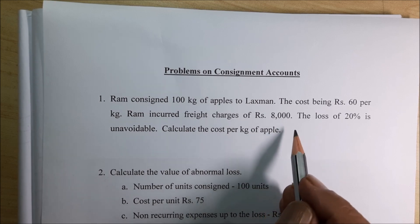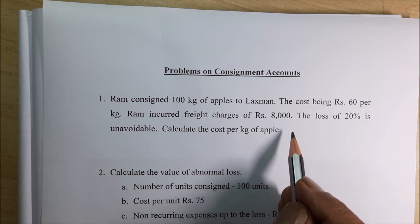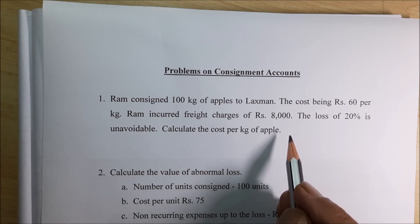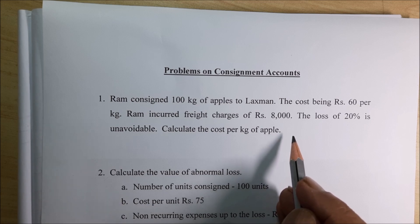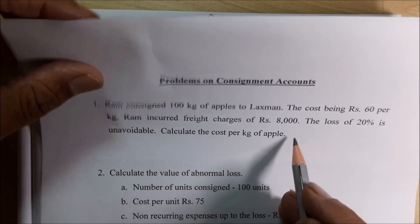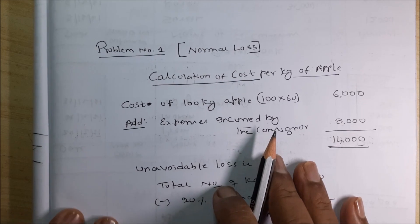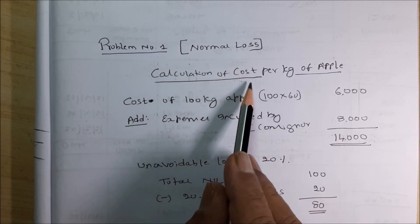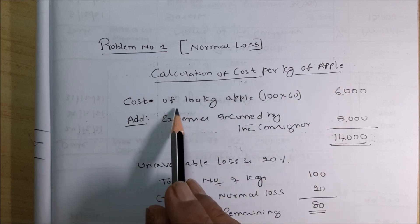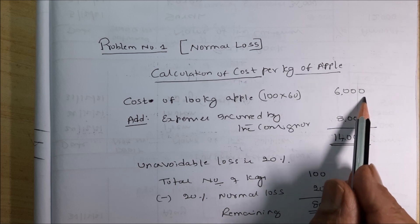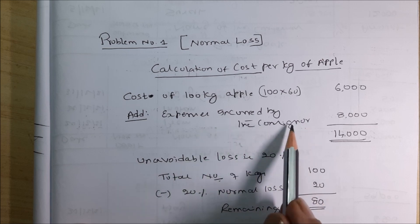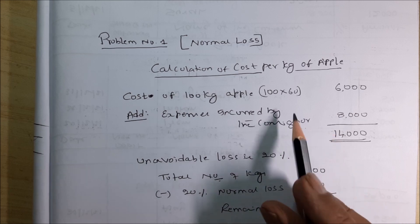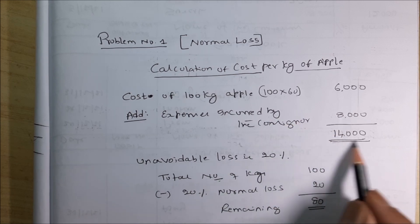We are supposed to take only non-recurring expenses plus cost for the calculation — the product cost plus the non-recurring expenses only. We will not take recurring expenses because recurring expenses keep changing. Cost of 100 kg apples: 100 × 60 = Rs 6000. Add non-recurring expenses (freight): Rs 8000. Total cost for 100 apples is Rs 14,000.